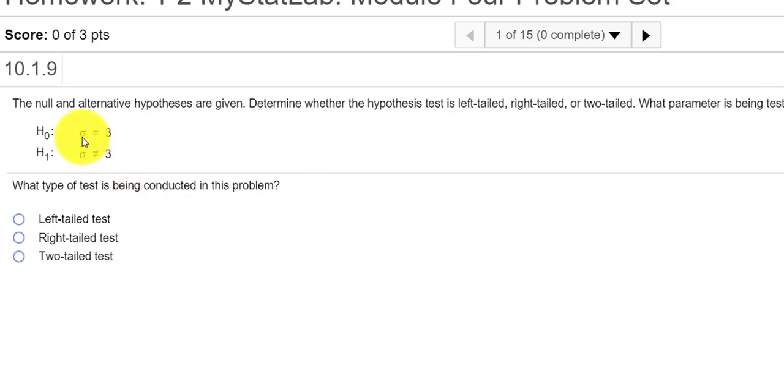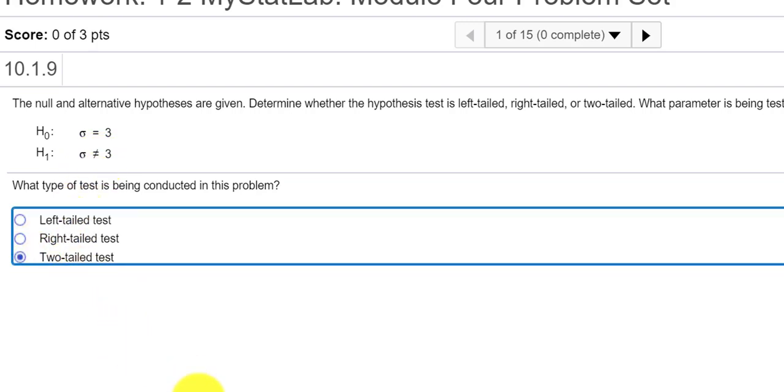Okay, so it looks like we have a standard deviation. We're testing a standard deviation, so we're saying it's either equal to three or not equal to three. Whenever you have the not equal to sign or symbol, it's a two-tailed test. If I have an inequality sign that's pointing to the left, that would be considered left-tailed. If the inequality sign was pointing to the right, it'd be a right-tailed test, and then if there's a not equal sign, we call it a two-tailed test.